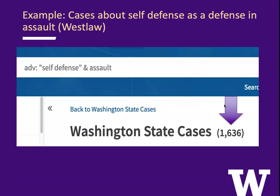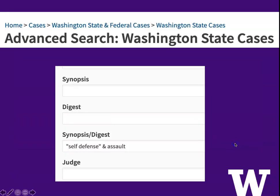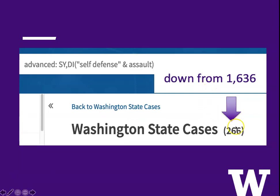Let's switch to Westlaw for an example. What if we're looking for Washington cases about self-defense as a defense in assault? Just searching for self-defense and assault gives us over 1,600 cases. If we click on advanced search, we see that Westlaw has a template that we can fill in. I want to look for self-defense and assault to be in either the synopsis or the digest field. Now we get 266, down from 1,636 — so it's much more focused.